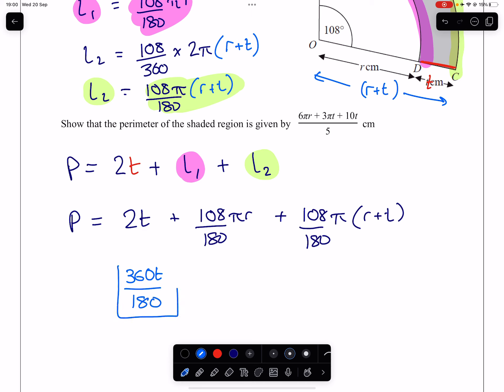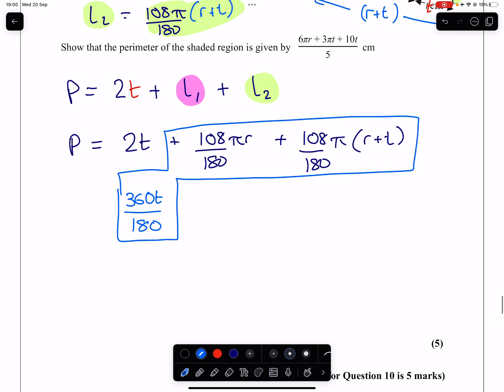So we have this fraction plus these two. They all have the same denominator. So I'm just going to take one step right now to add all of the numerators up. So we have 360T plus 108πR. I can break out the brackets now at the same time actually. We'll end up with another plus 108πR and we're going to have a plus 108πT.